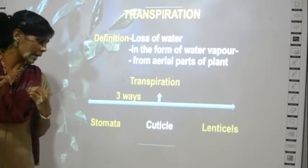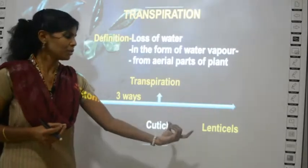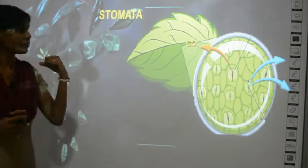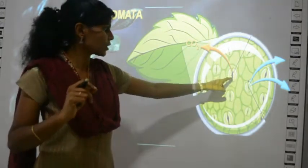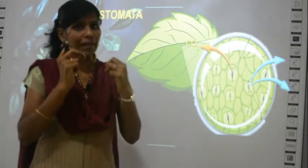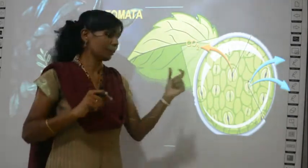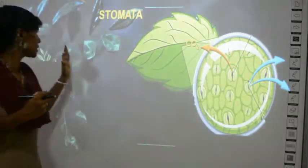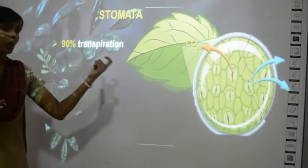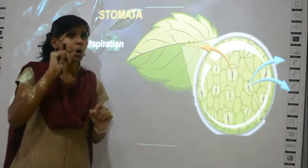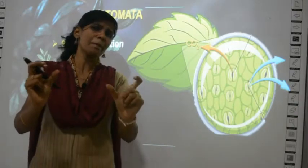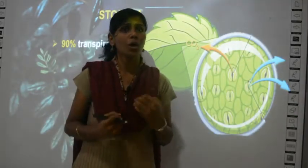The term stomata should be familiar to you. In the leaf you can see small holes, and these holes are called stomata. They are the main opening — in fact, almost 80 to 90 percent of transpiration happens through this opening called stomata. Stomata are tiny openings found in leaves and also sometimes in young stems, because a young stem can mimic or act like a leaf.